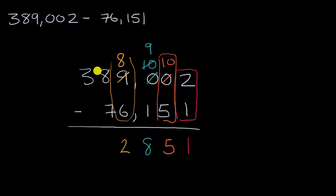And then I can go to the ten thousands place. This is essentially eight ten thousands or 80,000 minus 70,000 is going to be ten thousand, one ten thousand. And then last but not least, I have my three hundred thousands.